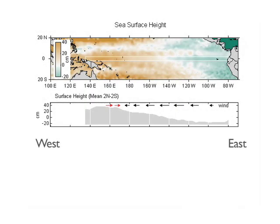This visualization depicts sea surface height in the Pacific equatorial region. The top panel describes sea surface height, where brown indicates higher sea surface height and green indicates lower. Brown dominates in the western Pacific Ocean.